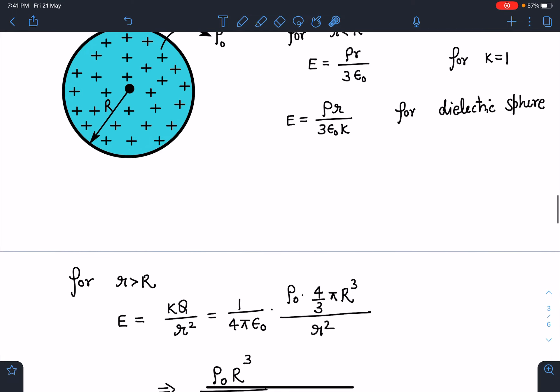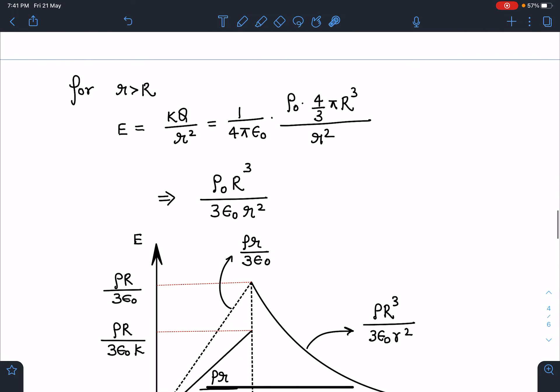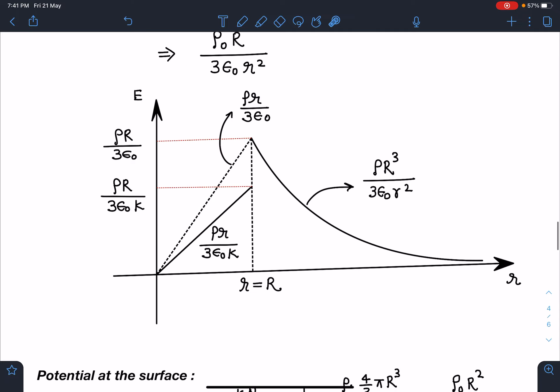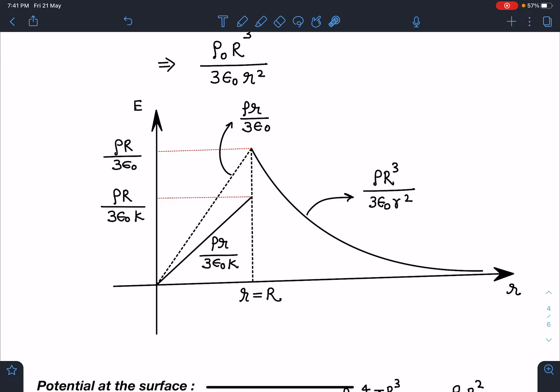Now for r greater than capital R it is in the air. So directly I can use the formula of this field. And that is going to be kq by r square. So 1 by 4πε₀ and q is ρ₀ by 4 by 3 πr³ divided by r². So when you simplify this we are going to get this E as ρ₀R³ by 3ε₀r². So here we can plot this graph.